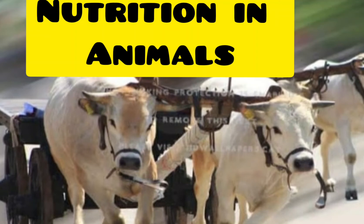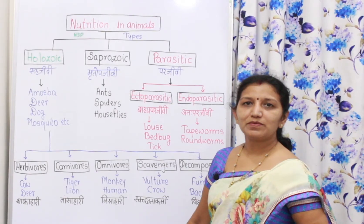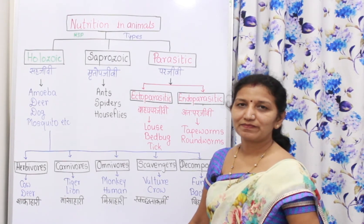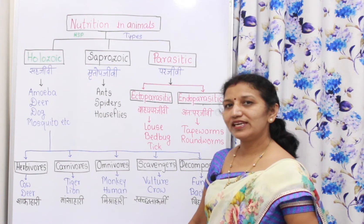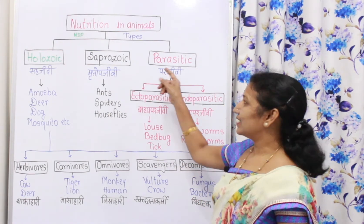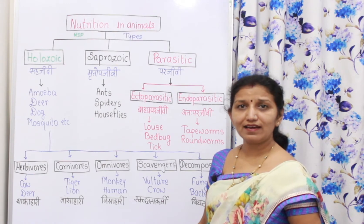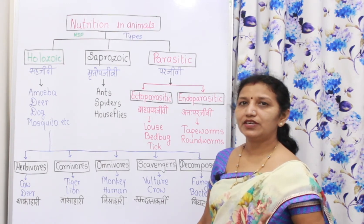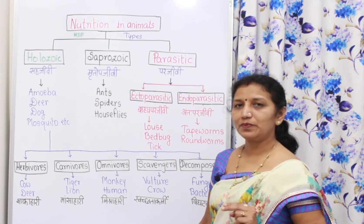We will turn to nutrition in animals. There are three main types of nutrition in animals. They are holozoic, saprozoic, and parasitic. Parasitic is again divided into two: ectoparasitic and endoparasitic.